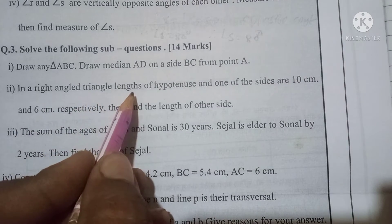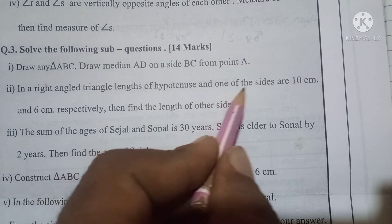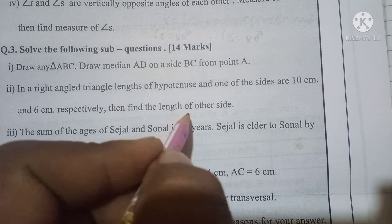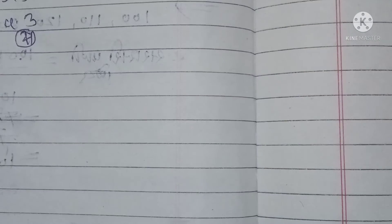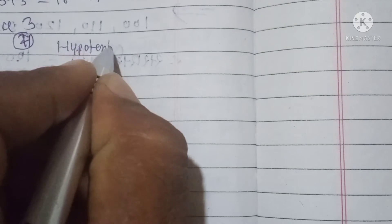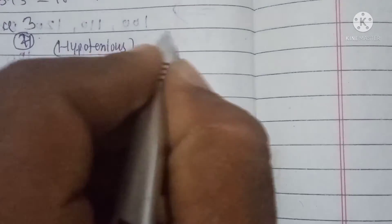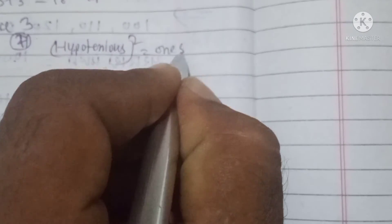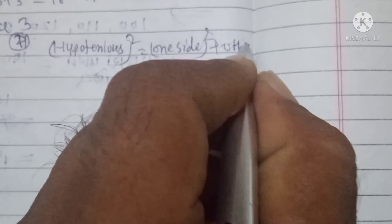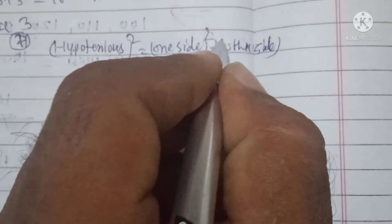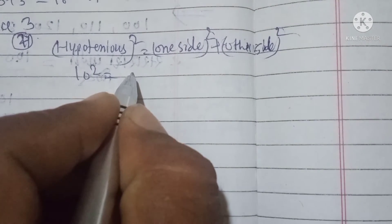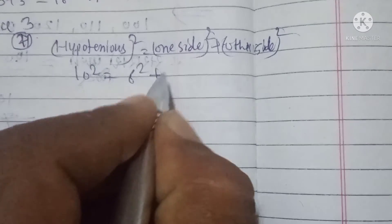In a right angle triangle, the length of the hypotenuse is 10 centimeters and one side is 6 centimeters. Find the length of the other side. By Pythagoras theorem: hypotenuse squared equals one side squared plus other side squared, so 10 squared equals 6 squared plus other side squared.